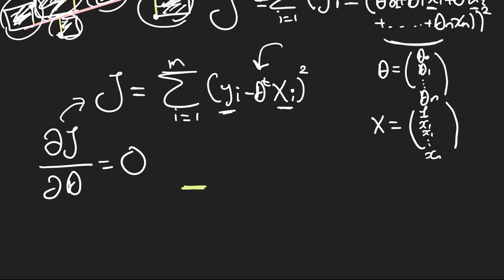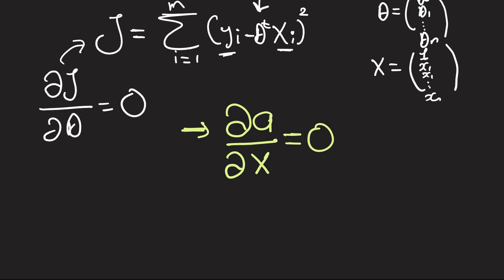So the first one is if you're differentiating a constant vector with respect to another vector x, then that's just going to give you a zero vector. And if you're differentiating a vector x with respect to itself, then you get the identity matrix.